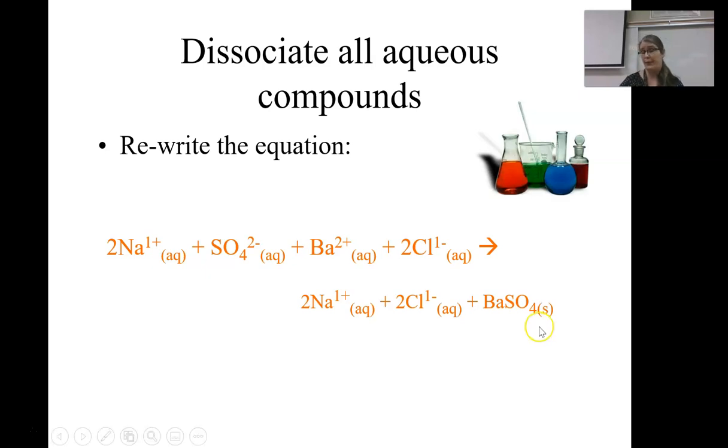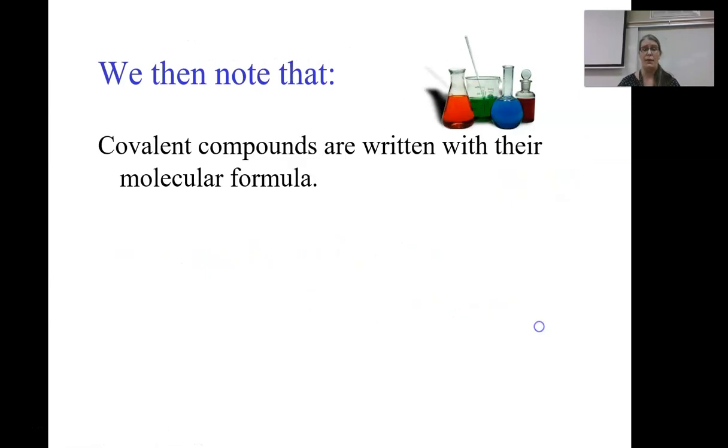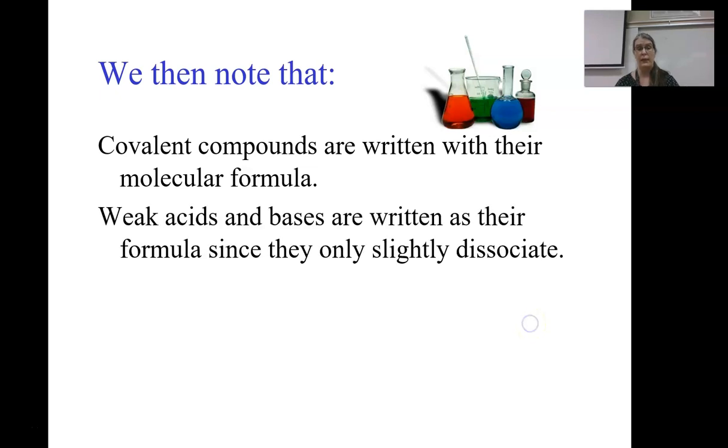A couple of other quick things that we'll see in a total ionic equation. Covalent compounds are written as their formula. So one example you'll often see here is water. Water is just written as H2O liquid. Weak acids and bases are written as their formula, because they will only slightly dissociate in water. So most of the weak acid in base will still have the H attached, for example, for a weak acid.